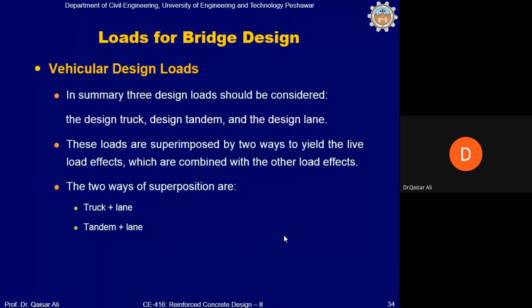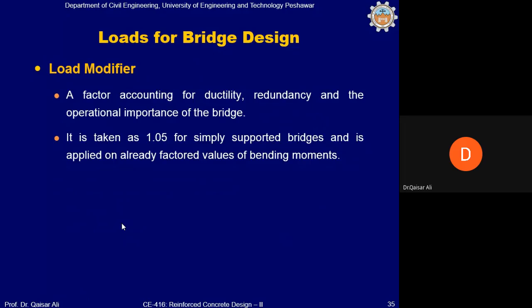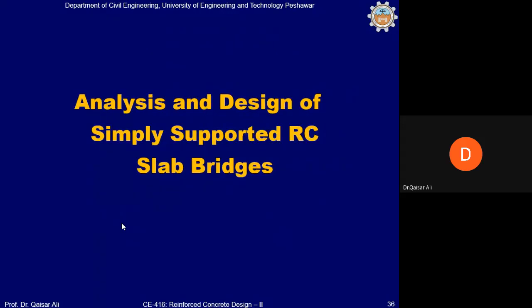In summary, three design loads are considered: design truck, design tandem, and design lane. AASHTO further recommends superimposing these by two combinations to yield maximum live load effects: truck plus lane, and tandem plus lane — whichever is higher. There is also a load modifier factor accounting for ductility, redundancy, and operational importance of the bridge. This load modifier is applied over and above all load factors and does not exist in building design — it exists only in bridge design.